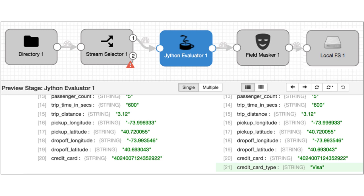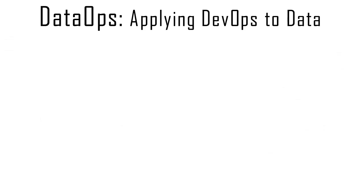StreamSets was built to anticipate and handle drift. Pipelines are intent-driven and require minimal specification of structure during setup. For example, if you're expecting payment information in a data stream, it's sufficient to state the intent as the presence of a credit card number as an attribute. It could be irrelevant what other attributes are, how many there are, or whether they change over time.